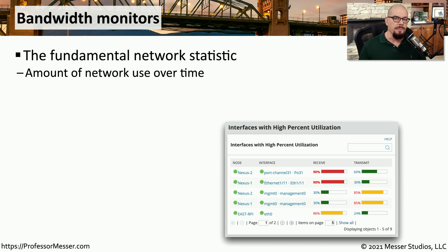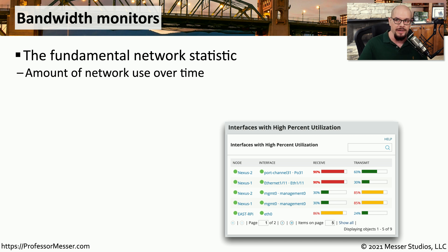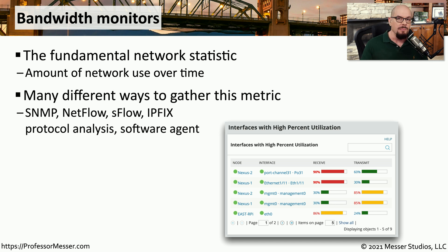Most of these infrastructure components are connected to the network, and usually these devices are passing or forwarding traffic from one network to another. It would be useful to know what the utilization is of the traffic going between those interfaces or onto those networks. Having some way to monitor the bandwidth can provide you with important metrics. A very simple way to gather this information might be with Simple Network Management Protocol, or SNMP.